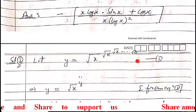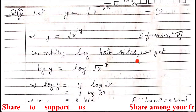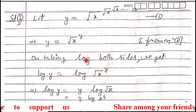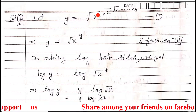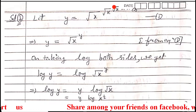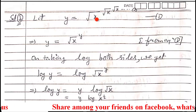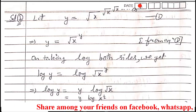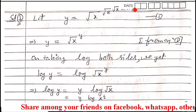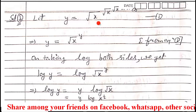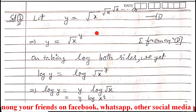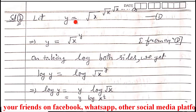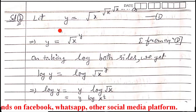Now we start part b. In part b, the function is root x raised to root x raised to root x, repeating until infinity — an infinite nested radical.